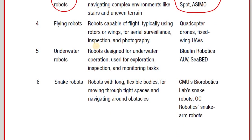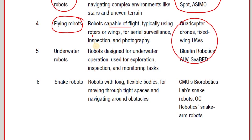Flying robots are capable of flight — examples include quadrotor drones and fixed-wing UAVs. Bluefin Robotics AUVs are examples of underwater robots. Snake robots have long flexible bodies for moving through tight spaces and navigating around obstacles — examples include CMU's biorobotics lab snake robots, OC Robotics and continuum arm robots.